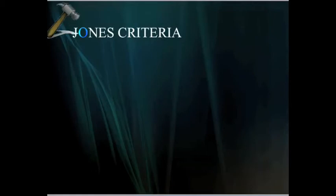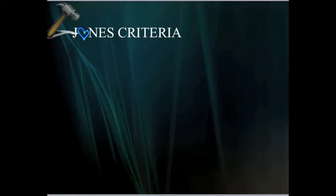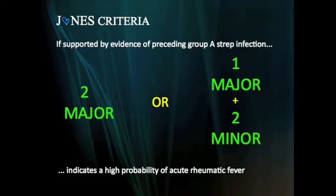We're going to discuss the Jones criteria in helping make the diagnosis of acute rheumatic fever. These criteria say that at least two major manifestations be present, or one major and two minor.